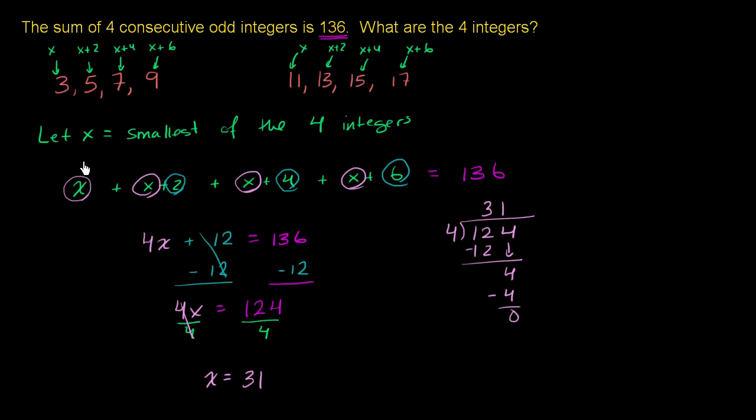So x is equal to 31. So x is the smallest of the four integers, this is 31. x plus 2 is going to be 33, x plus 4 is going to be 35, and x plus 6 is going to be 37. So our four consecutive odd integers are 31, 33, 35, and 37.